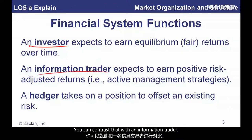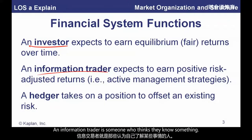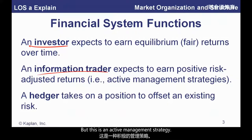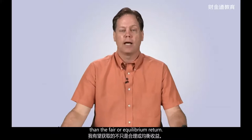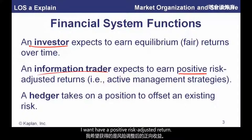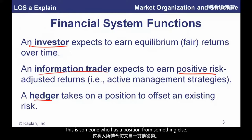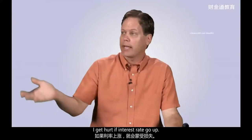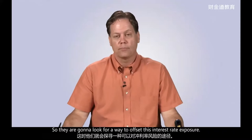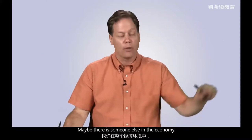You can contrast that with an information trader — someone who thinks they know something. That doesn't mean inside information, but this is an active management strategy that says, 'I am a superior analyst or I have better information, and I'm expecting to earn something more than the fair or equilibrium return.' They want a positive risk-adjusted return and to add value by allocating capital. And then there's a hedger — someone who has a position from something else and some risk they don't want to carry going forward.